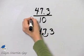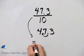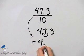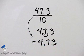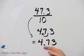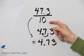So this result is 4 point 73 or 4 and 73 hundredths. And you can work this out using long division.